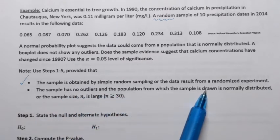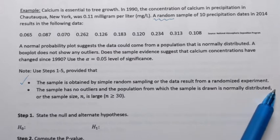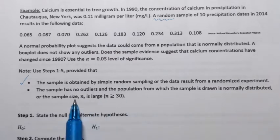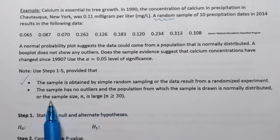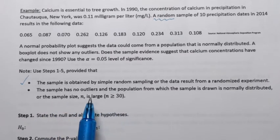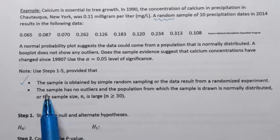The second one is that the sample should not have any outliers and the population from which the sample is drawn should be normally distributed, or the sample size n should be large, which is greater than 30. Well, that's not our case. Our sample size is only 10.